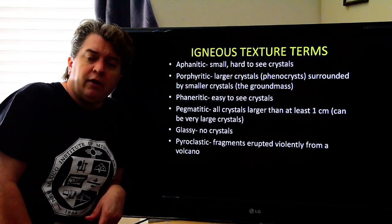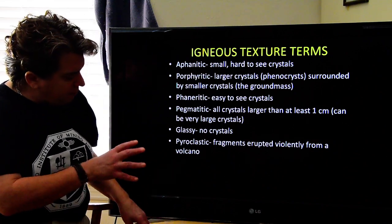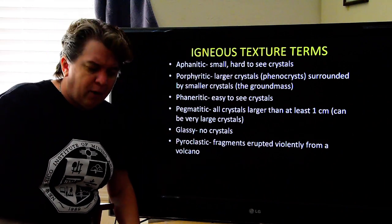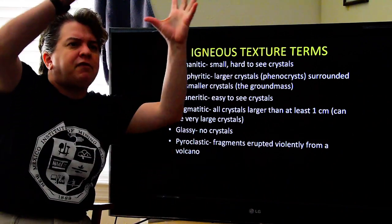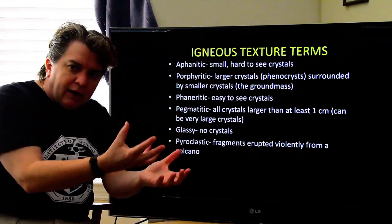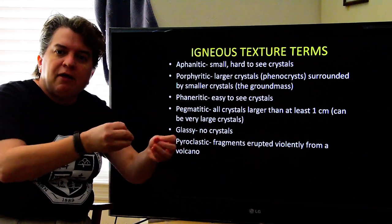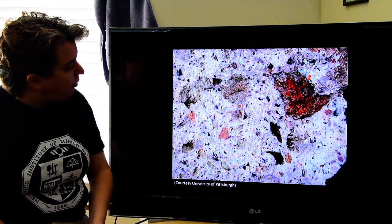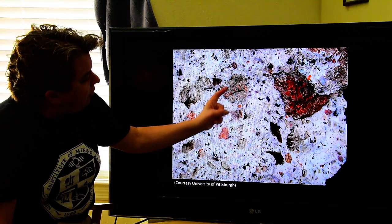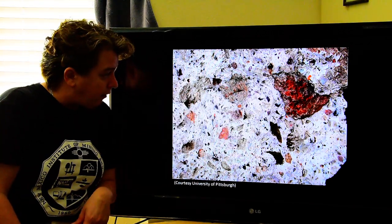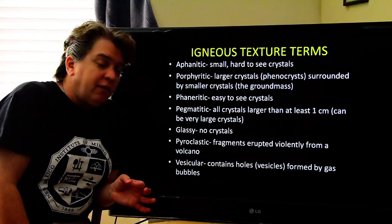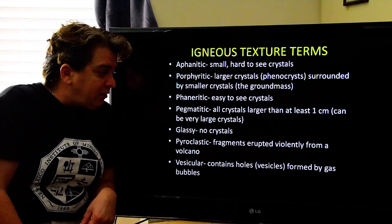You can also have a pyroclastic texture — 'pyro' means fire and 'klastos' means broken in Greek, so 'broken fire.' These are created when you have a violent, explosive volcanic eruption. The pieces are basically blasted out of the volcano, land on the ground, stick together, and form pyroclastic igneous rock. This is a very typical pyroclastic texture where you can see all these little different bits and pieces stuck in there.